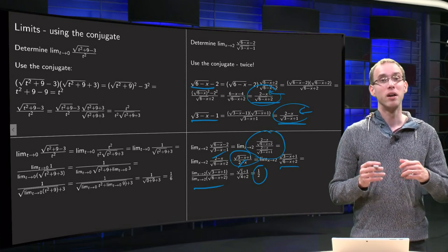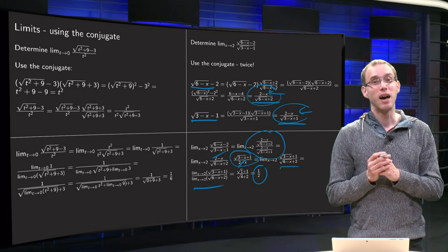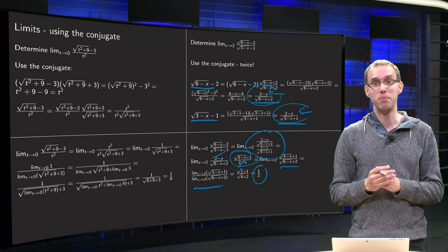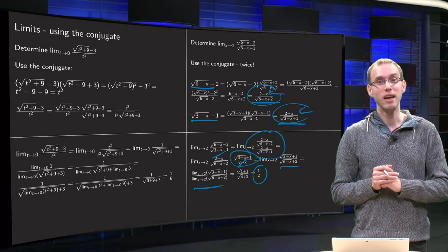So there you are. So you see how you can use the multiplication with this conjugate in order to simplify your limits, in order to remove your indeterminacy.